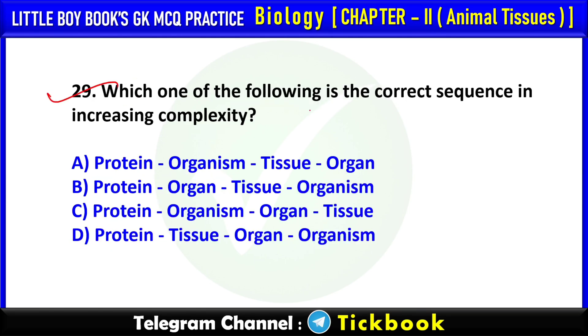Q29. Which one of the following is the correct sequence in increasing complexity? Option number D: Protein, tissue, organ, organism.